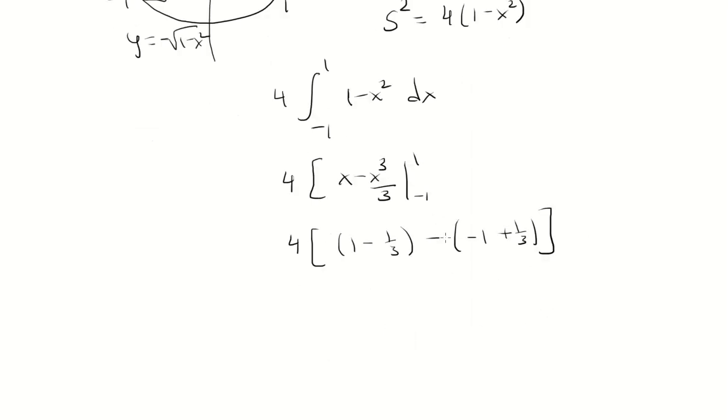So 1 plus 1 is 2, and then negative 1 third minus 1 third is negative 2 thirds. So this will be 4 times 4 thirds, which is 16 thirds. And that's going to be the volume.